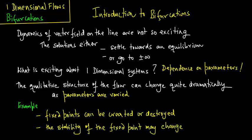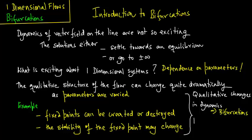The qualitative change in dynamics is what we refer to as bifurcations, and the parameter values at which such bifurcations occur are called bifurcation points.